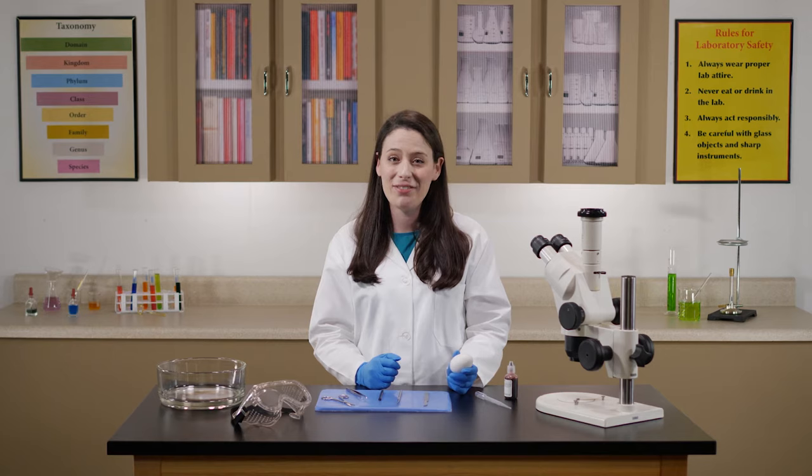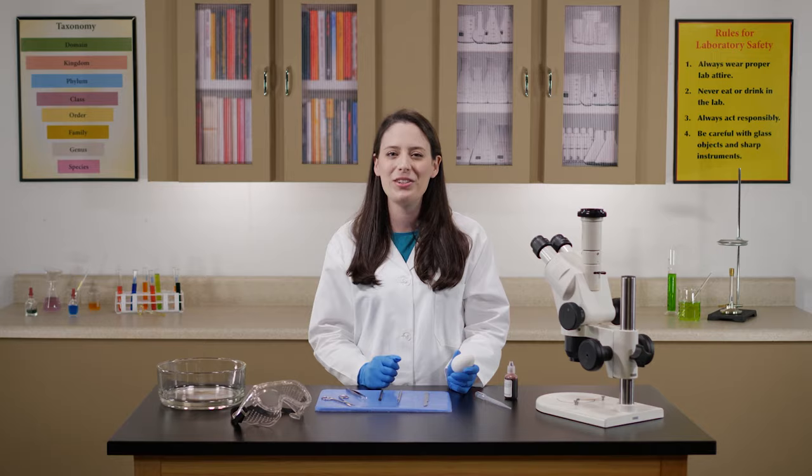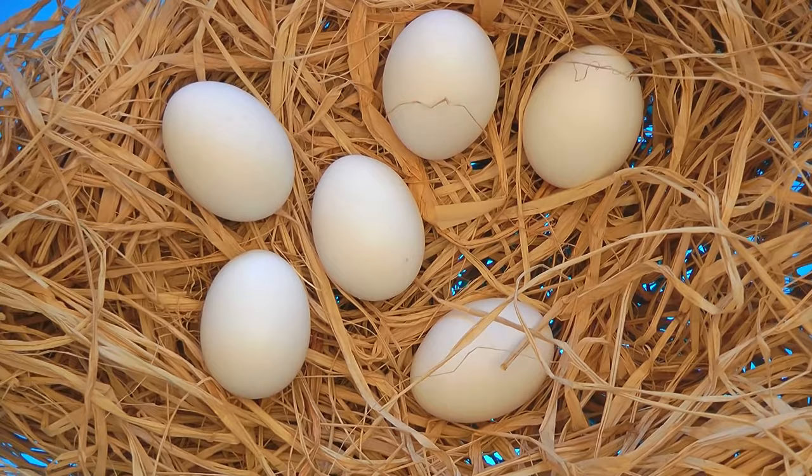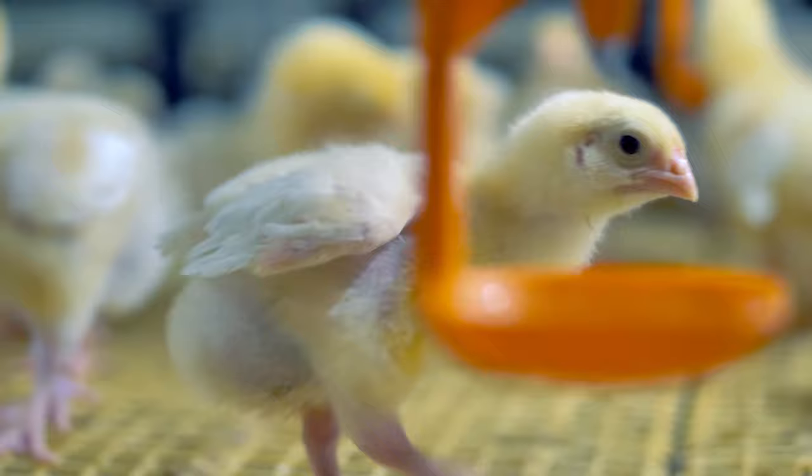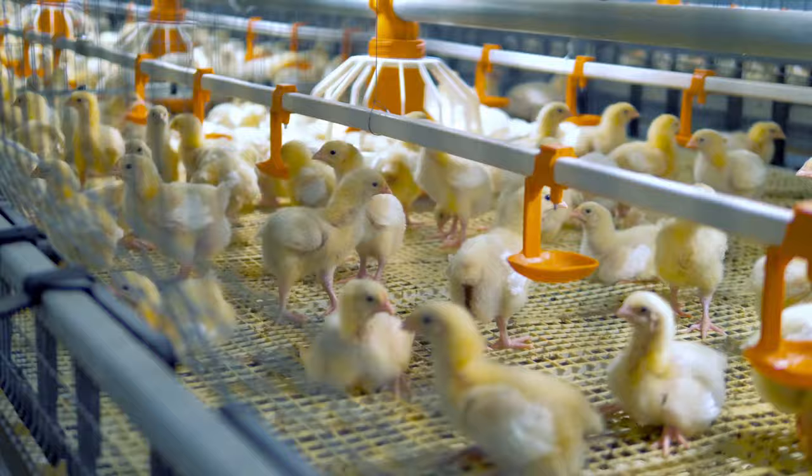Have you ever wondered how an egg such as this can develop into a chicken? In today's lab we will conduct an experiment to learn about the development of chicken embryos. Fertilized chicken eggs take about 21 days to develop and then hatch. During those 21 days the embryo grows from a single-celled zygote to a fully developed chick.